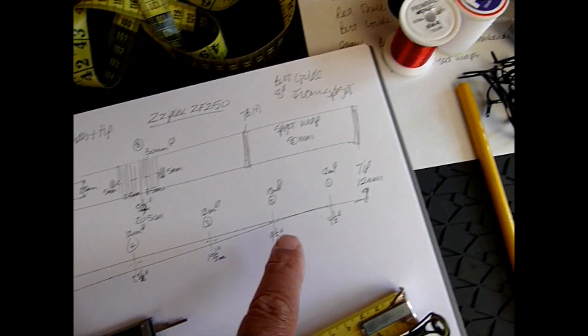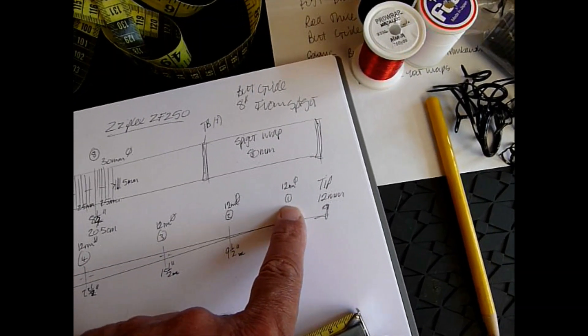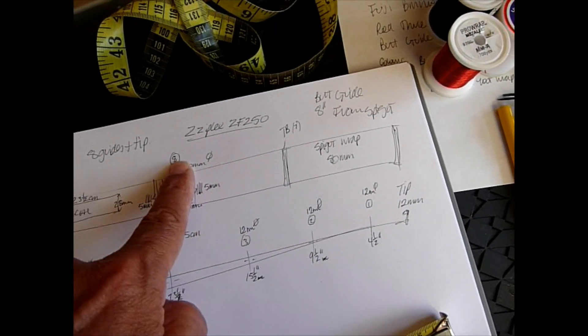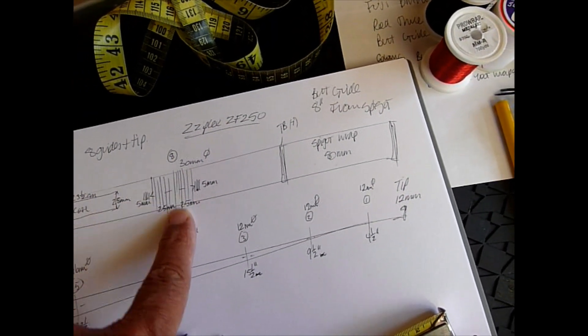The next thing that you need to do is to number the guides, so they go from one starting at the tip end, all the way down to eight. Number eight is your butt guide.